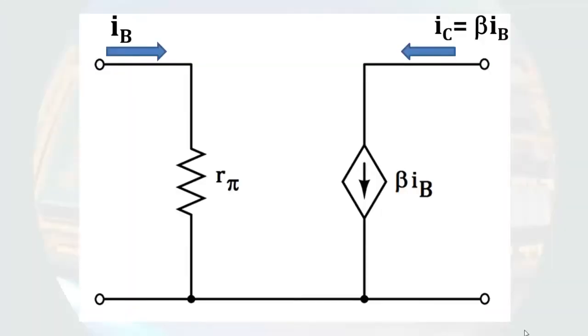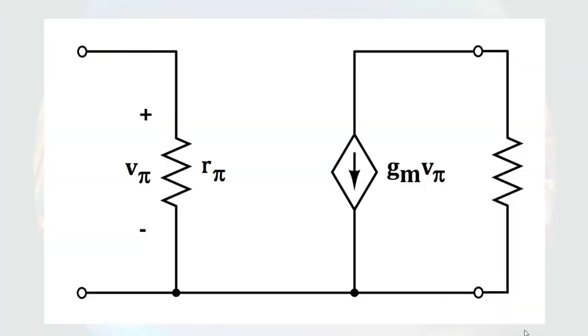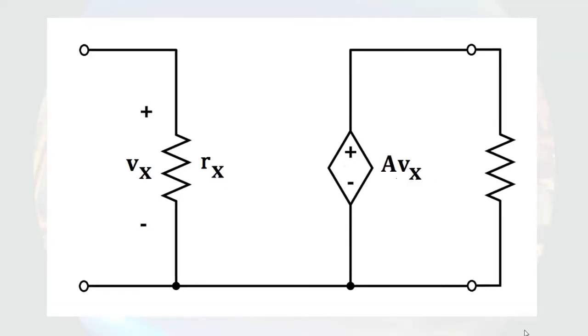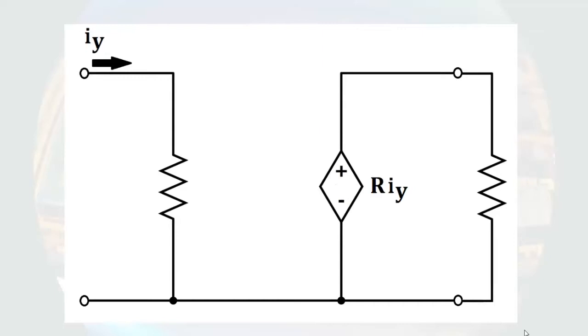Since we have voltage and current sources that can be controlled by either a current or a voltage, there are four types of controlled sources. We already have the current-controlled current source. We could also have a voltage-controlled current source, a voltage-controlled voltage source, or a current-controlled voltage source. There — we have all the sources we are going to use in this series.